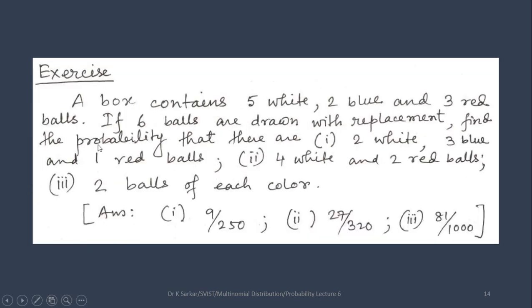Another question. A box contains 5 white, 2 blue and 3 red balls. If 6 balls are drawn with replacement, find the probability that there are 2 white, 3 blue and 1 red balls.